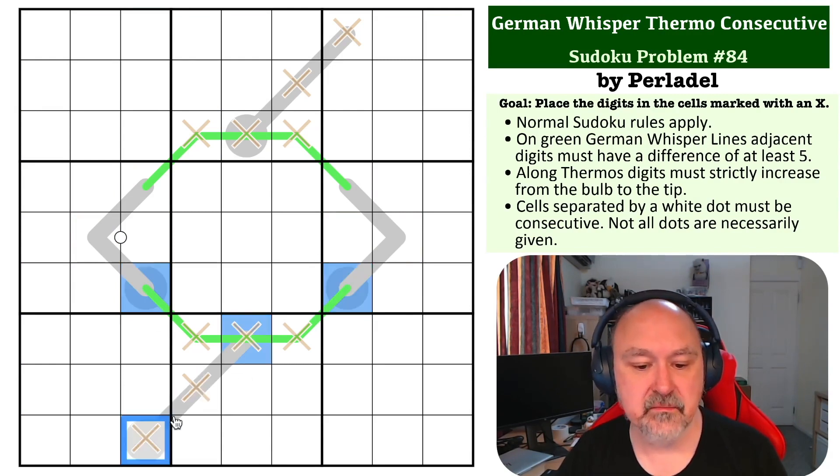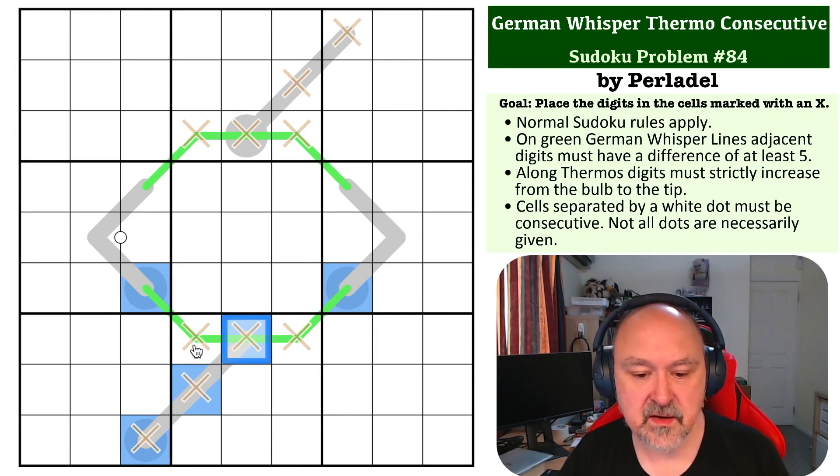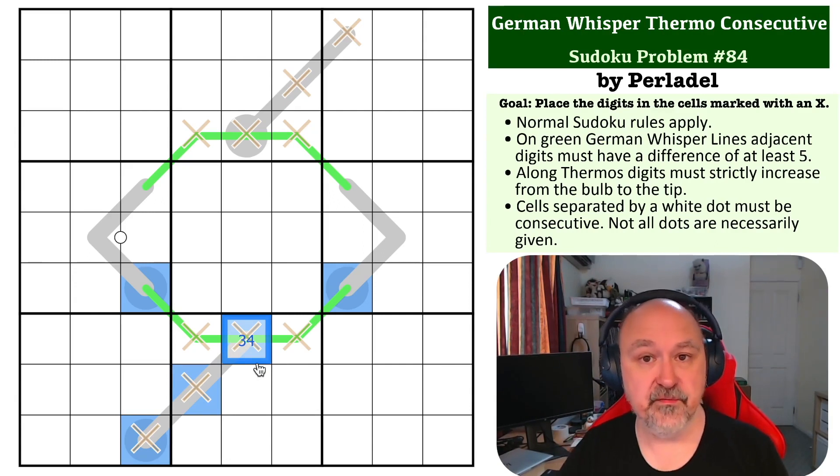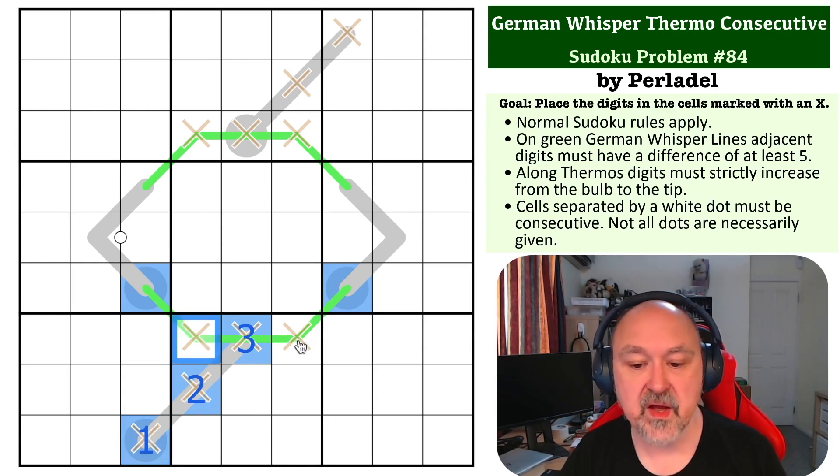This is at the end of a thermo. If this is a low digit, then these must also be low digits. It's from one, two, three, or four, but it's three digits along a thermo so it can't be one or two. And if it was a four, because of whisper logic, the only digit that is five away from four is nine, and both of those would have to be nine, which doesn't work. So this is a three. Then this can only be a two and this can only be a one. And by whisper logic, the only two digits that are five away from three are eight and nine.